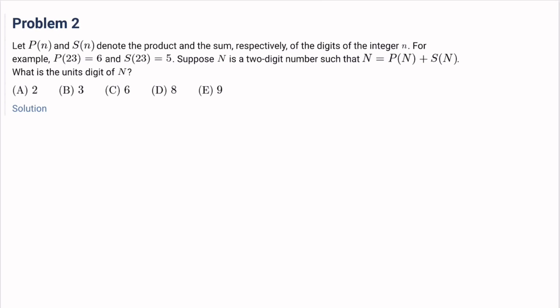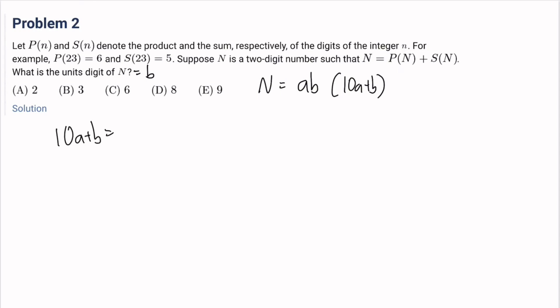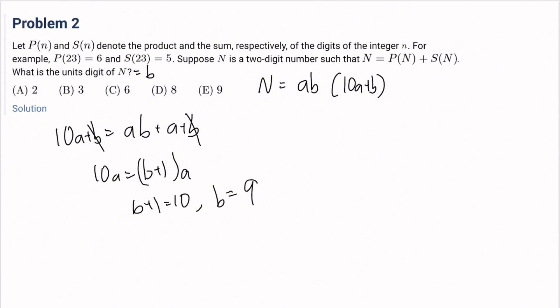Number two: let P(N) and S(N) denote the product and the sum respectively of the digits of the integer N. For example, P(23) equals 6, S(23) equals 5. Suppose N is a two-digit number such that N equals P(N) plus S(N). What is the unit's digit of N? Let N equal AB, so this is 10A plus B. Then 10A plus B equals AB plus A plus B. The B's cancel, so 10A equals (B+1) times A, so B plus 1 equals 10, B equals 9. The answer is E.